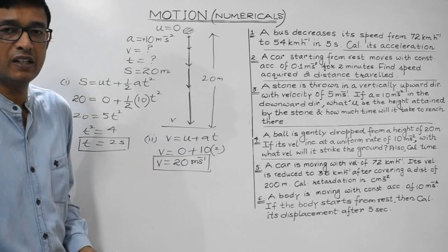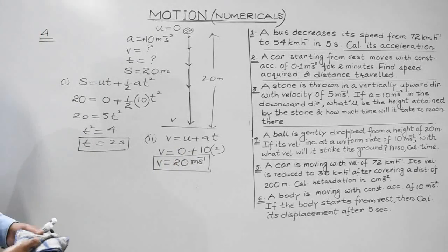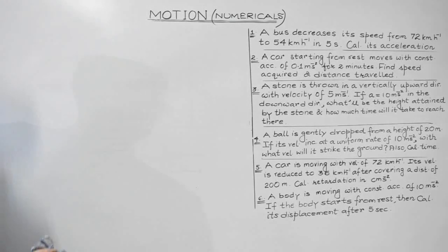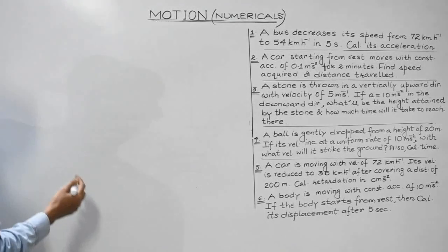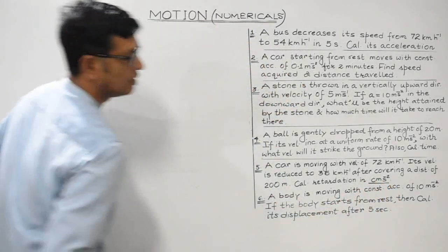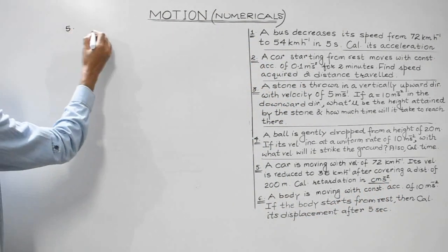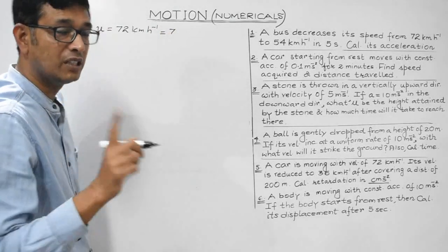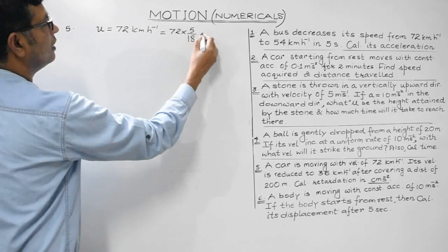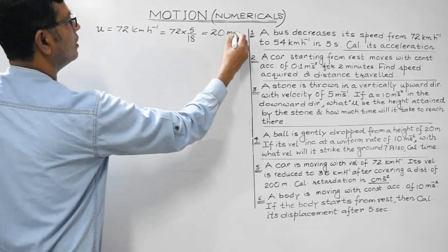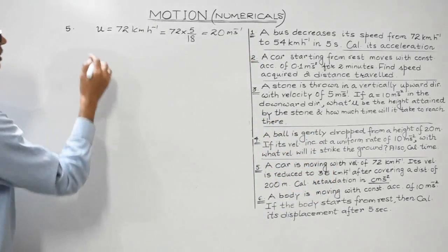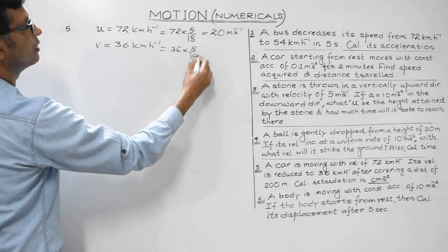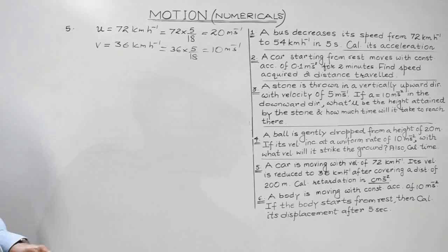The fifth question: a car moving with velocity 72 km/h is reduced to 36 km/h after covering 200 meters. Calculate the retardation in cm/s². First, convert to m/s: u = 72 × (5/18) = 20 m/s; v = 36 × (5/18) = 10 m/s. Distance S = 200 m.